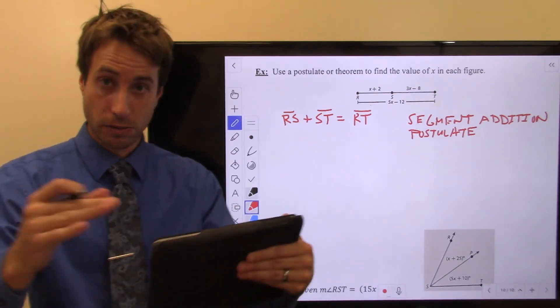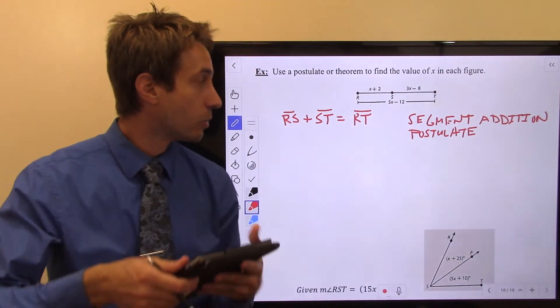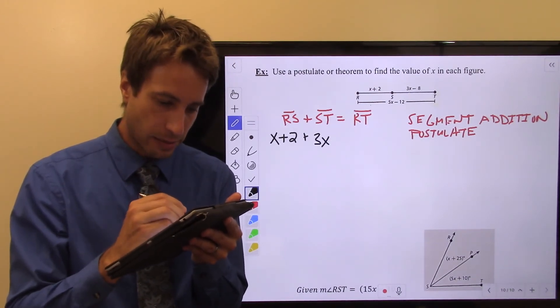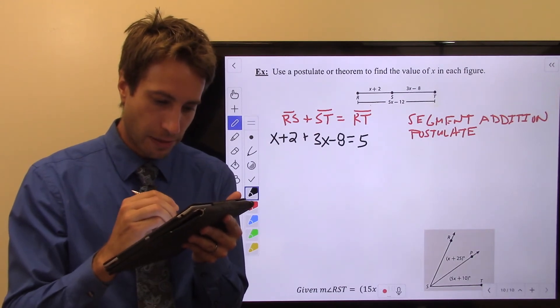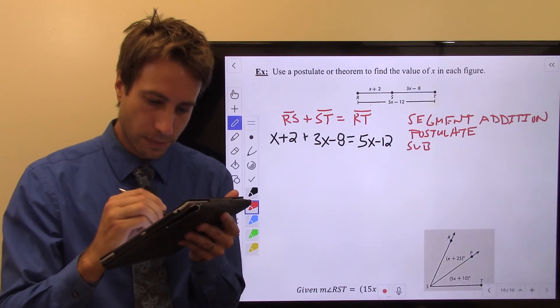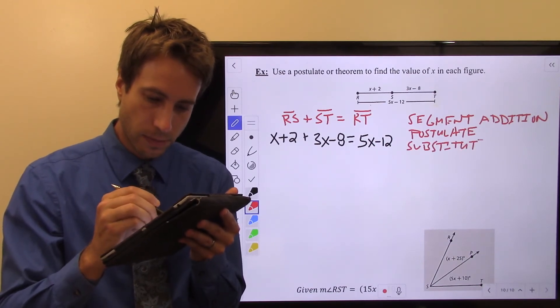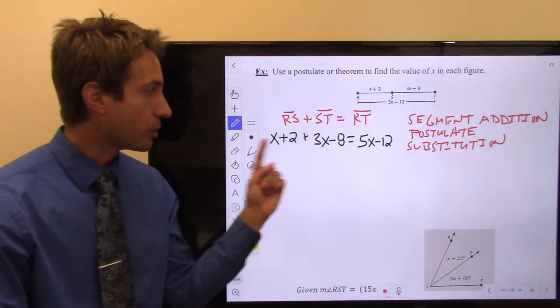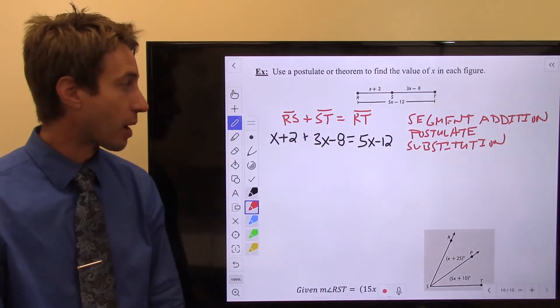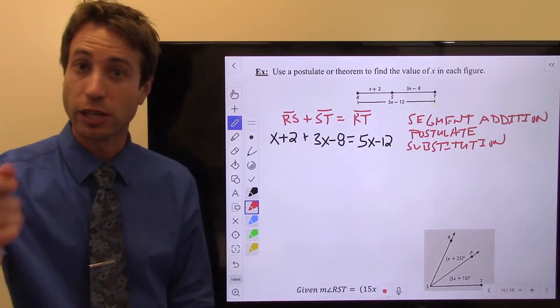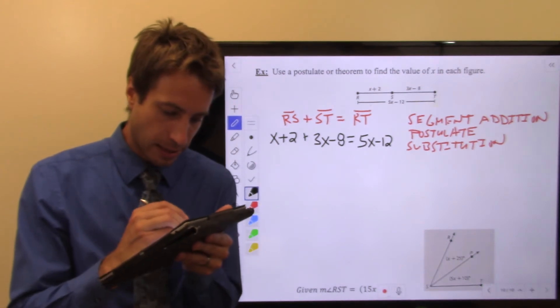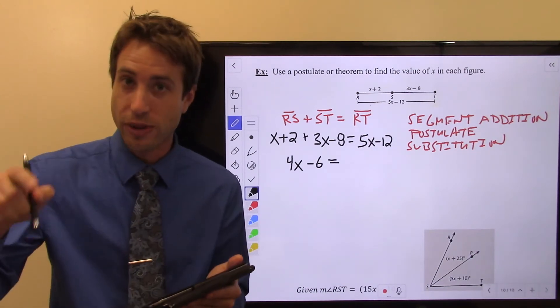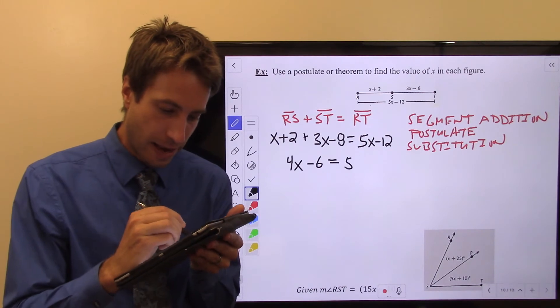So that is the segment addition postulate. Well, now we can start doing stuff. What is RS? Well, it's X plus 2. Plus, what is ST? 3X minus 8. What is RT? 5X minus 12. Guys, that's a substitution. I am substituting what I know the value of each of those to be. From there, we just start moving stuff around using those properties of equality to write the rest of this proof. Let's do it real quick. I'm actually going to do another substitution. 3X plus X. Well, that's 4X. That's a substitution. Negative 8 and 2 is going to be minus 6. Again, that's a substitution. I know that negative 8 plus 2 is equal to minus 6. Substitution. 5X minus 12. So actually, the justification for two steps in a row is substitution.